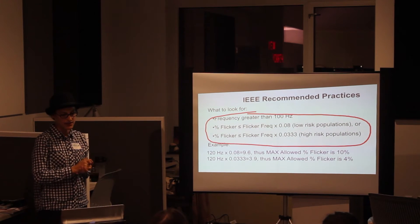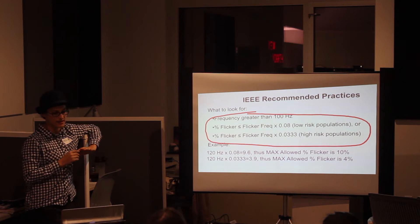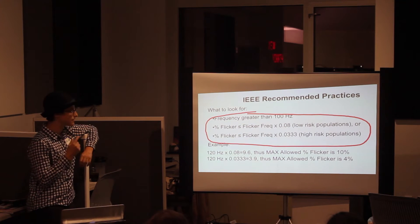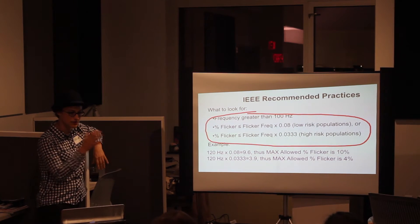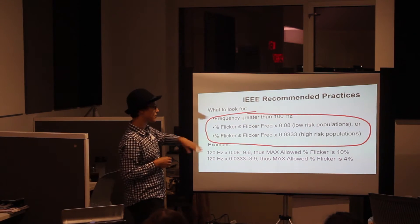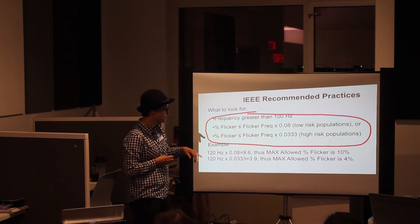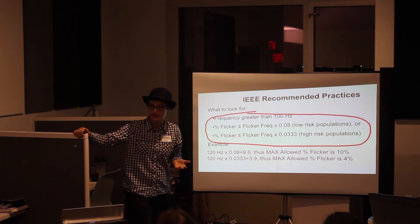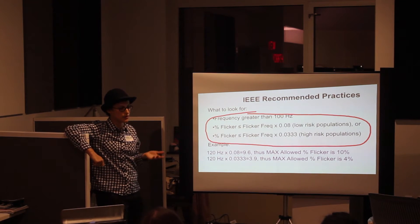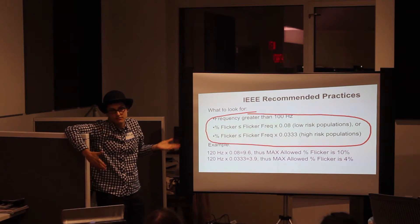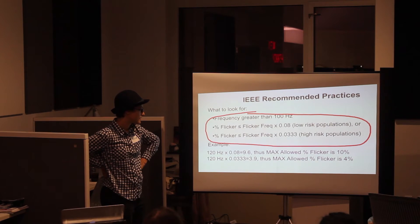Last year the IEE came out with a set of recommended practices. They recommend staying above 100 hertz, and in combination with that, considering flicker percent — since flicker percent alone doesn't account for frequency. They recommend using two factors: for low-risk populations (general public), a 0.08 multiplication factor; for high-risk populations such as healthcare facilities or schools where more sensitive people would be, a 0.033 factor.